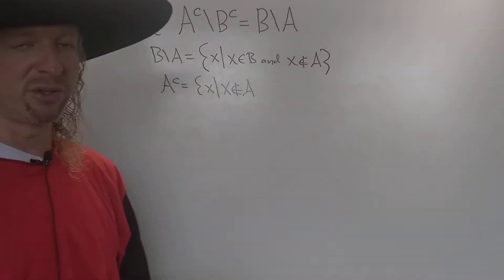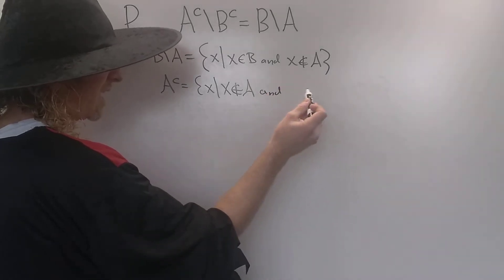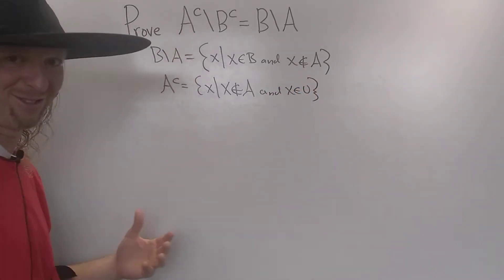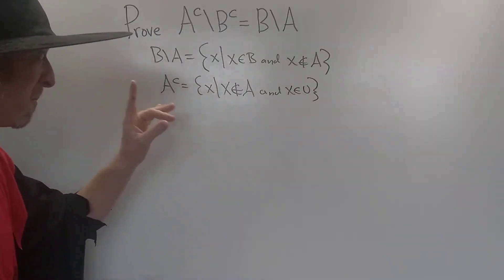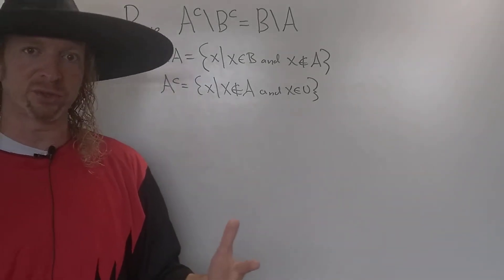Now, you can add an extra condition here. You can also say X is part of your universal set. So if it's not in A, where is it? Well, it's in the universal set. What's the universal set? What's the universe? And so when you're dealing with sets, all of your elements belong to something called the universal set.